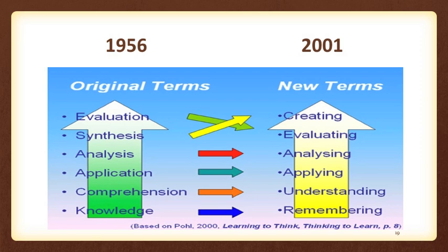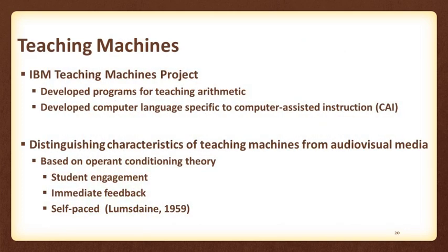The IBM Teaching Machines Project was instrumental in developing programs for teaching arithmetic and developing computer language specific to computer-assisted instruction. The distinguishing characteristics that separated these teaching machines from other audiovisual media were based on operant conditioning theory. Students were actively engaged by responding to explicit cues reinforced through practice and testing. Each time, the student received immediate feedback and knew whether the response was correct, allowing direct or indirect correction. The learning process was self-paced, allowing students who grasped information to move forward rapidly while others moved at a pace necessary to achieve the learning outcome.